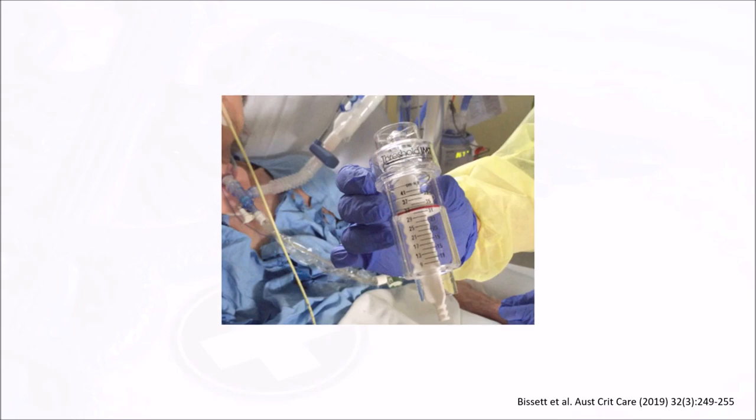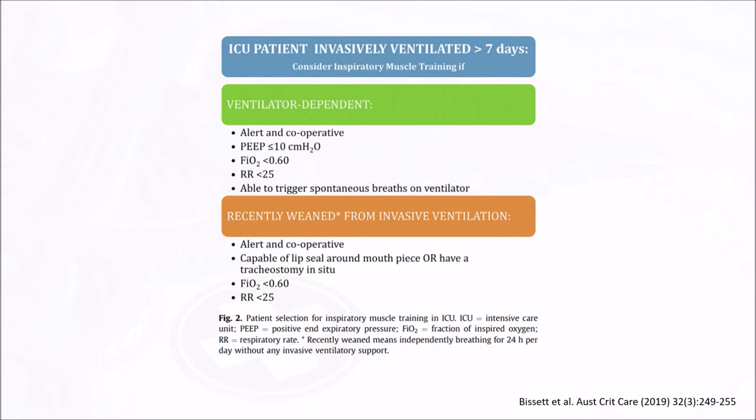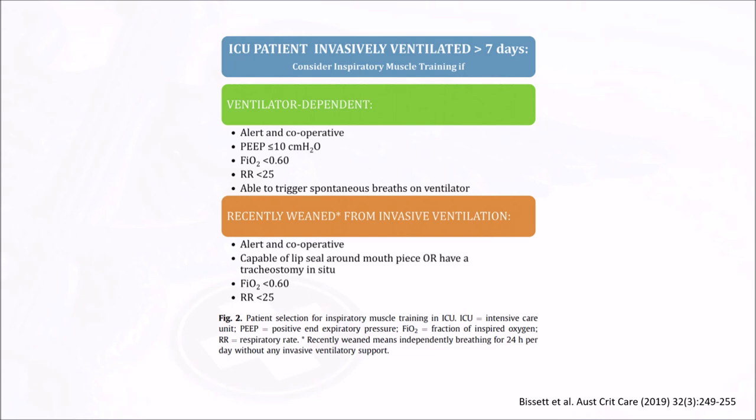Keep in mind that there are several factors to consider in determining whether IMT is appropriate for an ICU patient. Here's a figure that summarizes these factors well. Of course, the patients must be alert and cooperative so that they can follow your instructions. It's very important to always explain the procedures and make sure the patients understand why we are using IMT and how such a technique can help them. They should not be in need of high PIP or FiO2 levels. They should be calm and stable, with a good respiratory rate, and able to trigger spontaneous breaths if they are still on the vent.